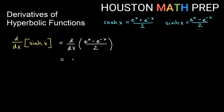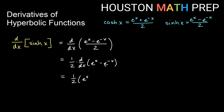So we'll do the derivative with respect to x of e to the x minus e to the negative x, all over 2. If you prefer, you can pull the 1/2 out — you certainly don't have to — but you could say we'll make it 1/2 times the derivative of e to the x minus e to the negative x. If we do the derivative, we'll get 1/2 times the derivative of e to the x, which is e to the x itself. Then the derivative of negative e to the negative x — the chain rule is going to give us a negative 1 when we do the derivative of the inside.